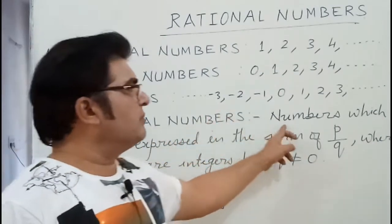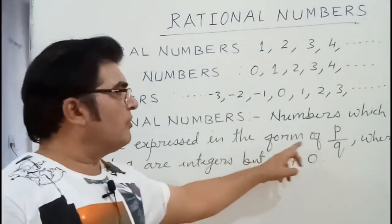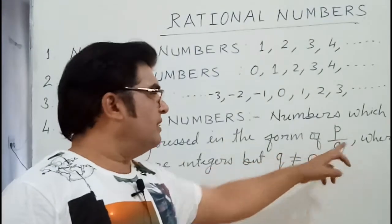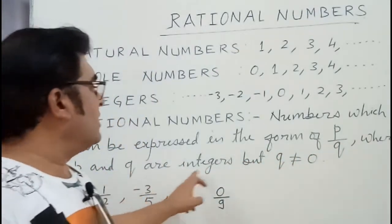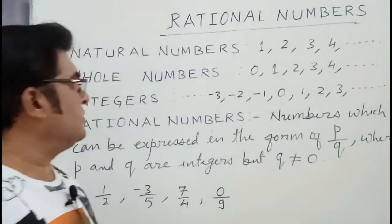Rational numbers are the numbers which can be expressed in the form of P upon Q, where P and Q are integers, but Q is not equal to 0.